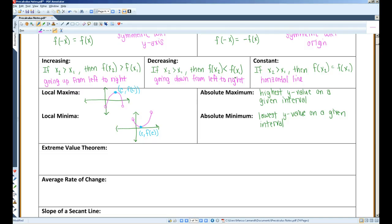When the graph of a function is increasing to the left of x equals c, and decreasing to the right of x equals c, then at c, the value of f is largest. This value is called a local maximum. Maxima is the plural of maximum.